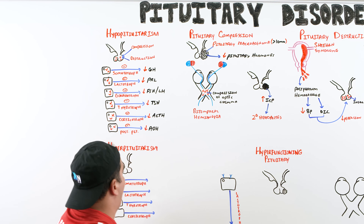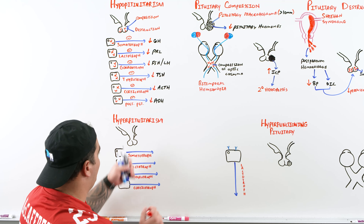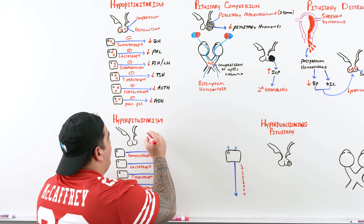Hyperpituitarism is when the pituitary is hyper-functioning. This is usually due to a tumor — but unlike the macroadenoma that compresses tissue, here we're talking about a tiny tumor called a pituitary microadenoma. This small tumor contains hyperactive cells that secrete excessive amounts of specific hormones.